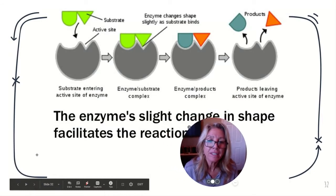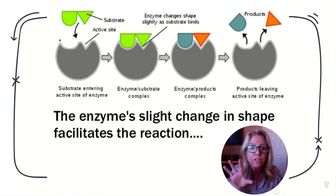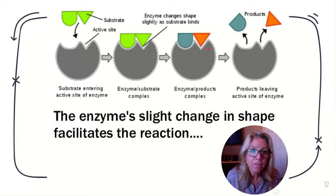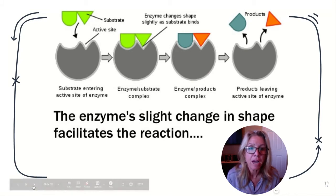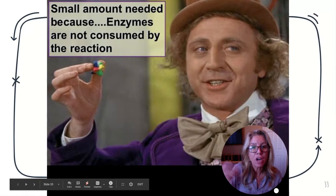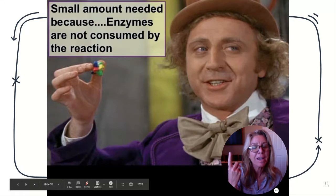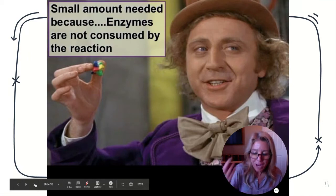Here you can see the temporary change in shape: the active site, the substrate binding, and then the product. Anything that changes the shape is going to interfere with the reaction rate. You only need a little tiny bit of enzyme because they're not consumed by the reaction. Enzymes are not consumed by the reaction, so they can be used over and over again — like an everlasting gobstopper.